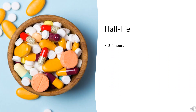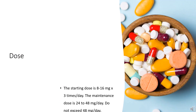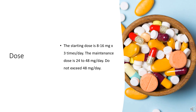The half-life of beta-histine is 3–4 hours. Beta-histine is available as a 16 mg tablet for oral use, and the dose should be exactly as prescribed by your doctor or pharmacist. For adults, the starting dose is 8–16 mg three times a day. The maintenance dose is 24–48 mg per day. Do not exceed 48 mg per day.